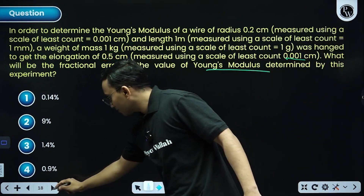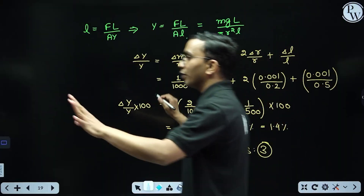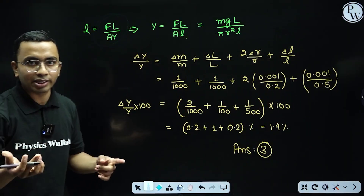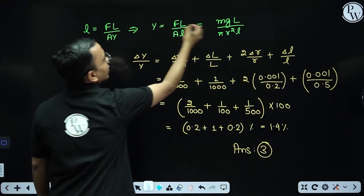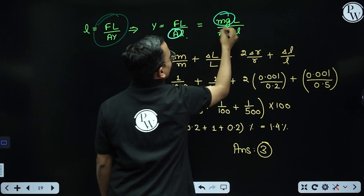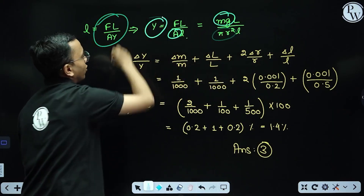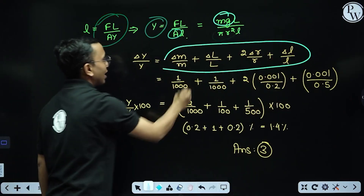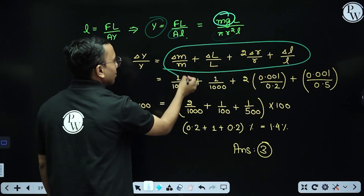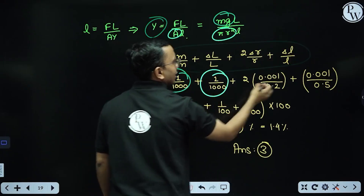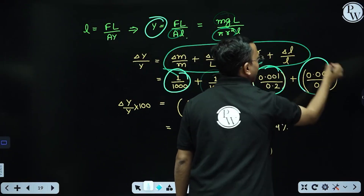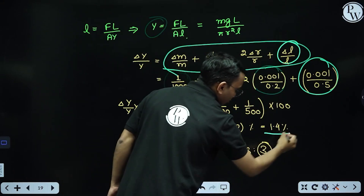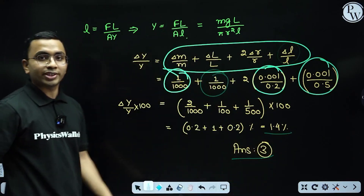Using δL = FL/AY from mechanical properties of solids, where F = mg and A = πr², I write the expression for Young's modulus. Then the error expression becomes: δY/Y = δm/m + δl/l + 2(δr/r) + δL/L, where the last δL is the elongation error. Putting in all values, the fractional error in Young's modulus comes out to be 1.4%.